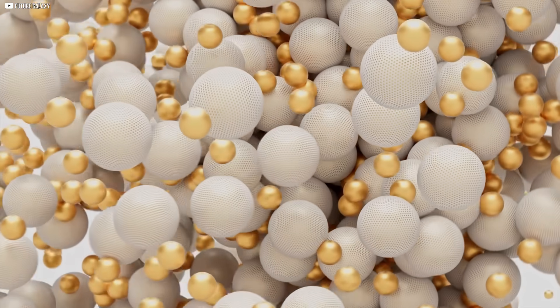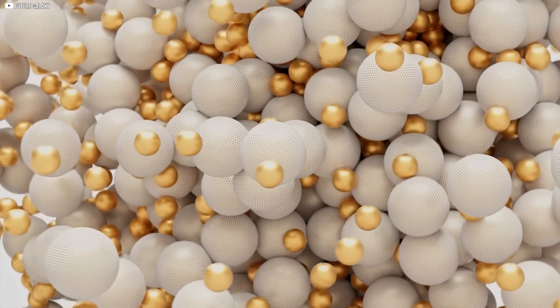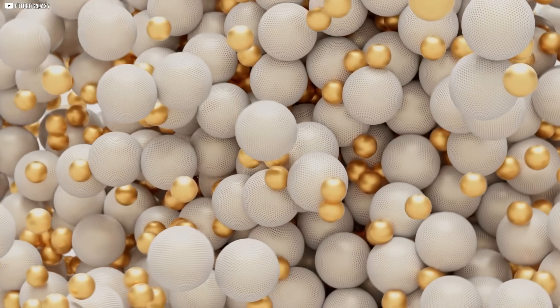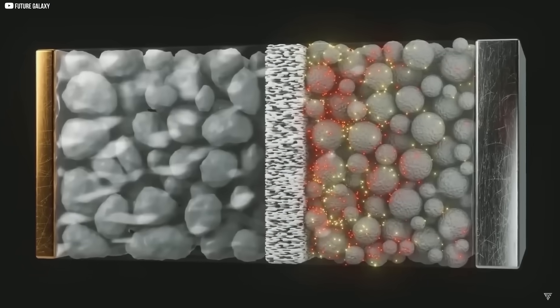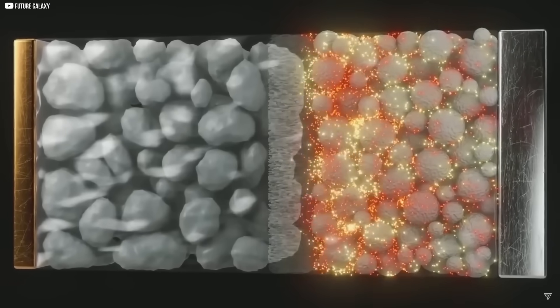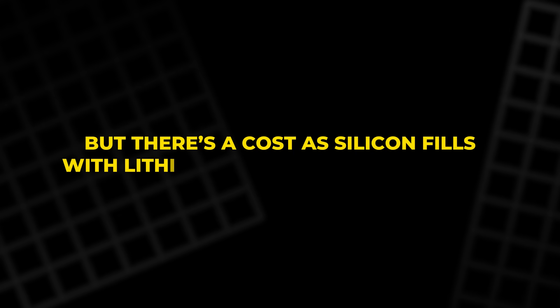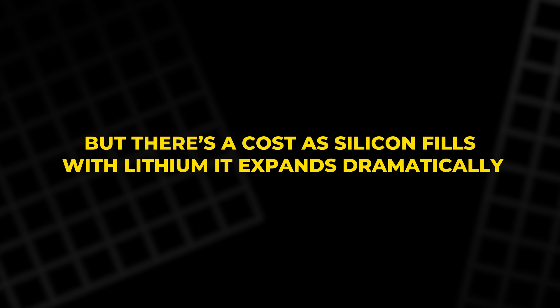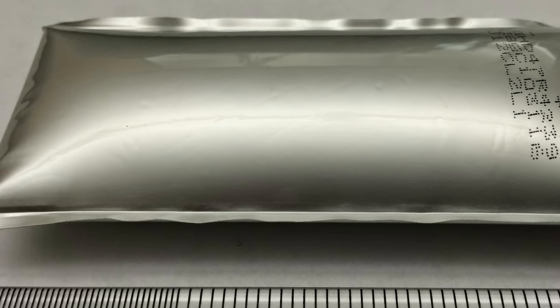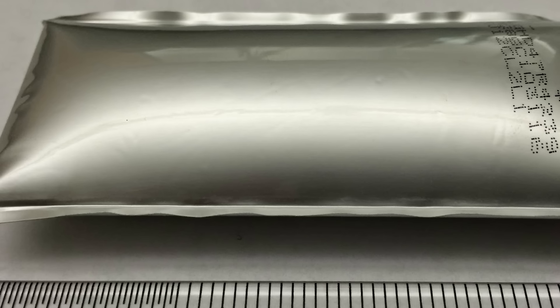Now picture silicon oxide. It doesn't just store lithium, it absorbs it. One atom of silicon can bond with four lithium atoms, allowing far greater energy density. But there's a cost. As silicon fills with lithium, it expands dramatically. That swelling causes cracks, breaks, and rapid degradation.